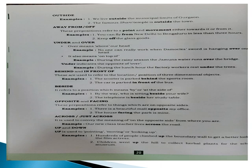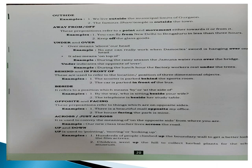On page number 20, more prepositions are given. 'Outside' is used for direction and location — for example, 'outside the municipal limits.' 'Away from' refers to a point or moment either towards it or from it — for example, 'You can fly from New Delhi to Bangalore in less than three hours.' 'Off' is used as in 'Keep off the glass goods.' Then 'under' and 'over': 'over' means above one's head — 'No one can really work when Damocles' sword is hanging over one's head.' The fan is over the head when you are sitting under the fan.